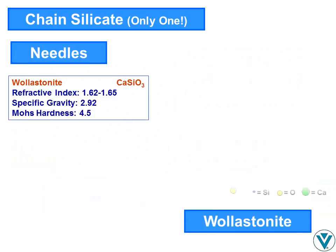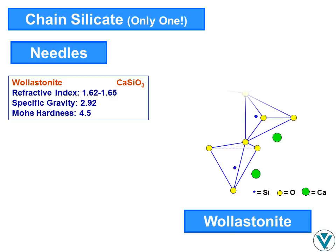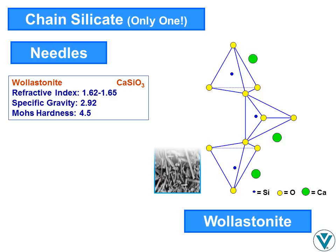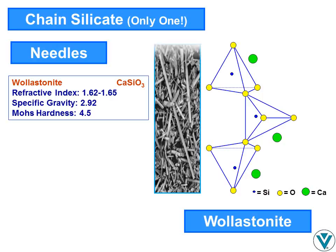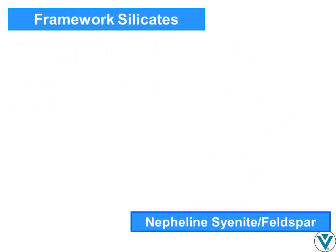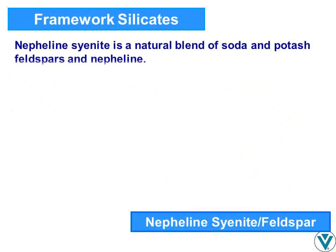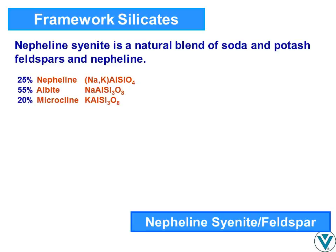Wollastonite is characterized by a repeating, twisted 3-silica tetrahedra unit. The chains formed by these silica tetrahedra grow in two dimensions and are connected by calcium in octahedral coordination. The chain structure and high tetrahedra density account for the typical needle-shaped crystals and relatively high hardness. In North America, typical nepheline syenite consists of approximately 25% nepheline, 55% sodium feldspar, and 20% potassium feldspar.